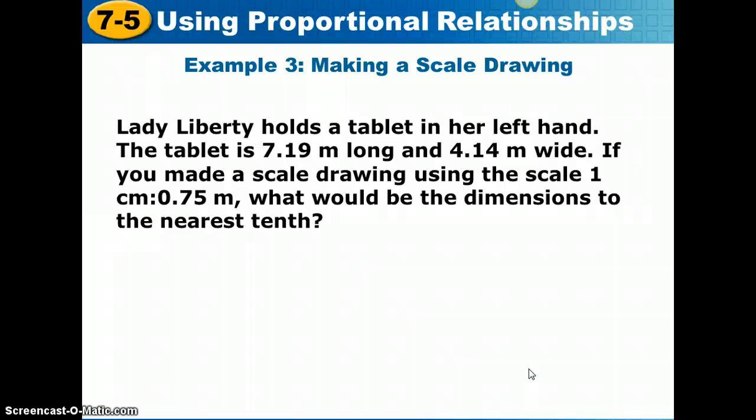Let's take a look at example 3, scale drawings. Lady Liberty, the Statue of Liberty, holds a tablet in her left hand. The tablet is 7.19 meters long and 4.14 meters wide. If you made a scale drawing of that tablet using the scale 1 centimeter to 0.75 meters, what would be the dimensions to the nearest tenth? We're asking for the scale drawing dimensions. We are given the actual dimensions of 7.19 meters long and 4.14 meters wide. We need to do a proportion to find each dimension. We'll be doing two different proportion problems.